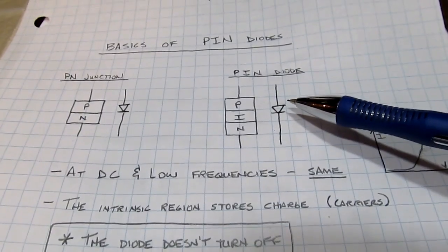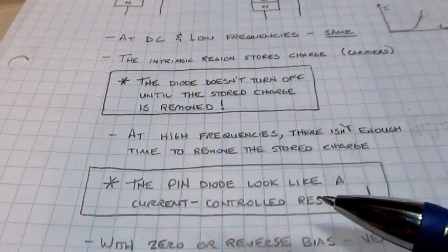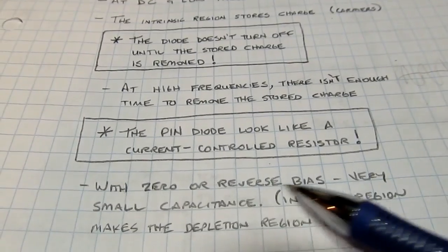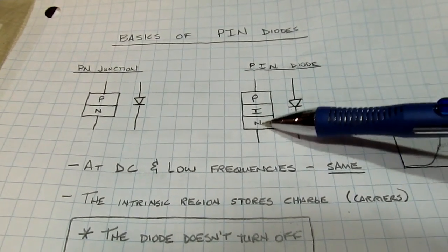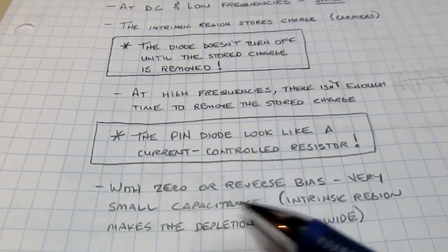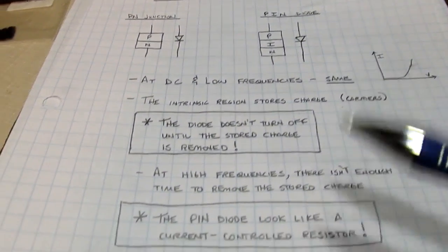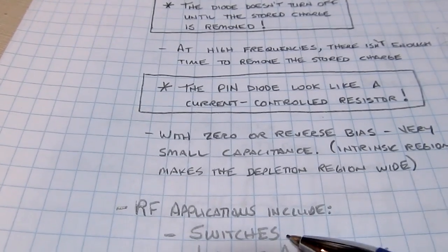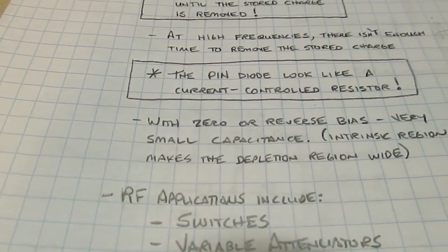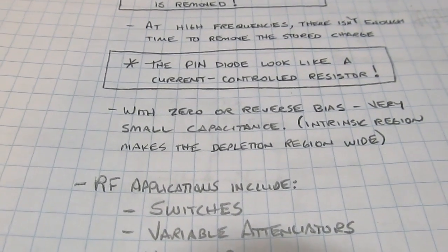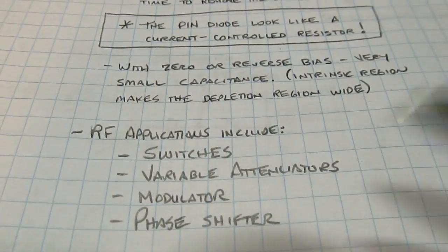There's a fairly linear relationship between forward current and the effective resistance of the device at RF frequencies, giving you a current-controlled resistor. With zero or reverse bias, the junction capacitance is quite low because the junction is now wide between the P and N regions, so the diode looks like a very low capacitance and therefore a very high impedance to RF. This makes it a great switch, and also a good variable attenuator, modulator, or adjustable phase shifter.